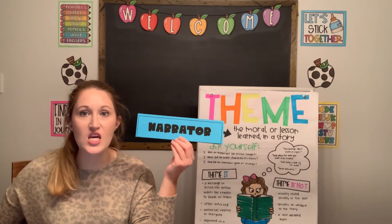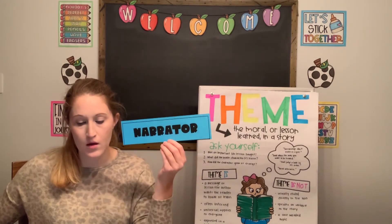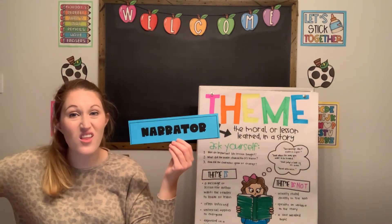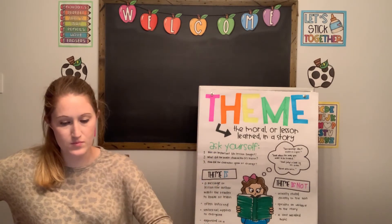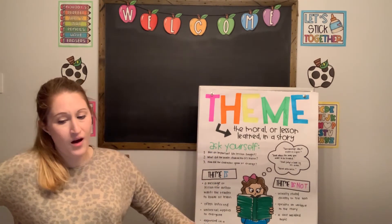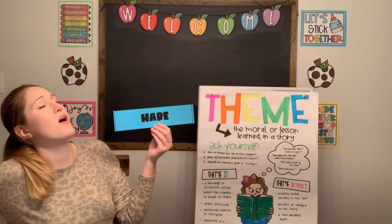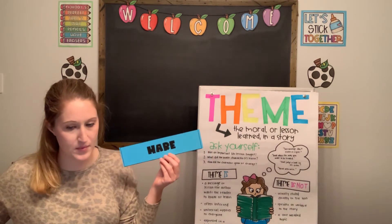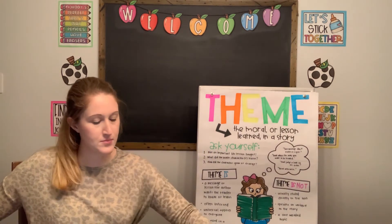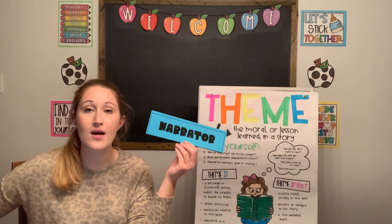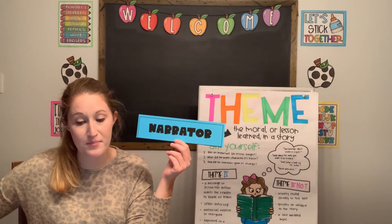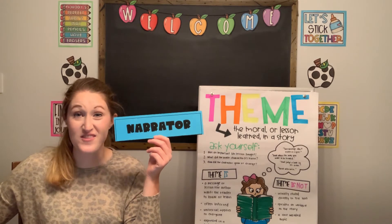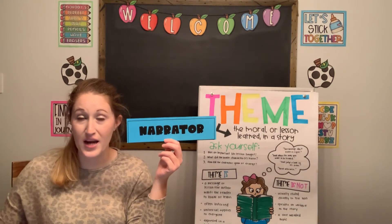Hare started off at a really quick pace. Tortoise came gliding along, but a lot slower than hare. 'Whew, I am so far ahead. He's never gonna catch up to me. I think I'll take a nap.' So hare laid down next to a tree and took a nap. But tortoise kept going along and eventually he passed the tree where hare was napping.